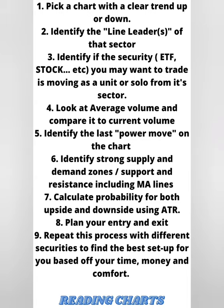Key six: identify strong support and strong supply and demand zones, including MA lines. Every chart has a supply zone — a selling zone — and support and resistance levels. Once you identify those zones, you can say to yourself: this stock is in a supply zone, so I want to buy puts, or it's in a demand zone, so I want to buy calls.